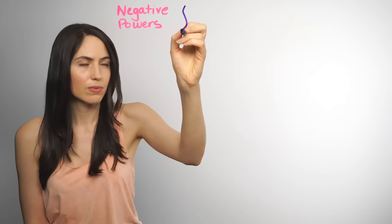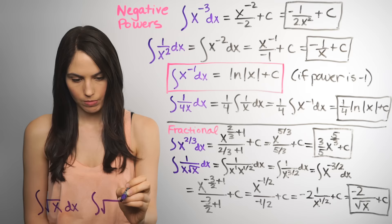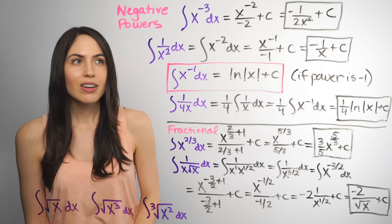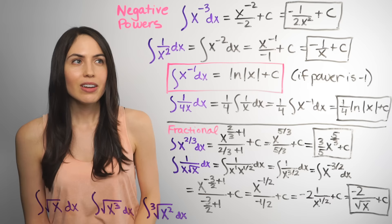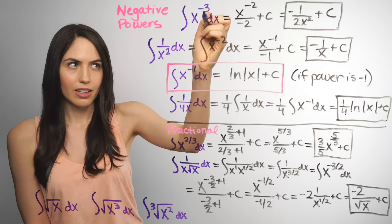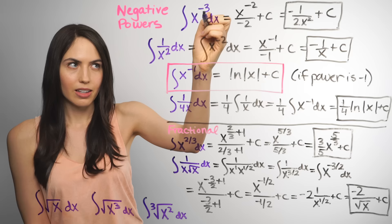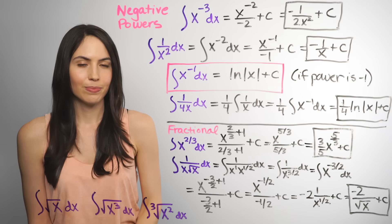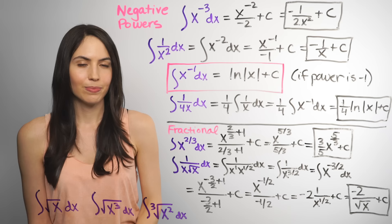So what about other kinds of powers? Maybe you knew it wouldn't always be so simple. What if you have a negative power or a fractional power or a negative fractional power or a root? If you have a negative power you can still use the power rule as long as your power is not negative 1. So here this negative 3 power becomes negative 2 with the power rule. That might be the opposite of what you would think. It's kind of counterintuitive. But increasing that by 1 makes it less negative. So it's negative 2.